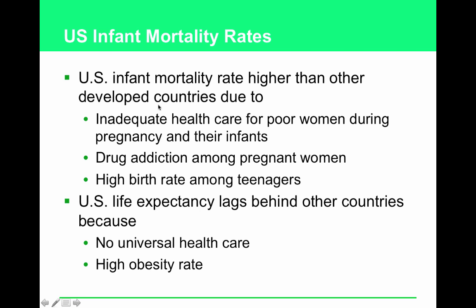As a side note, U.S. infant mortality rates are higher than other developed countries due to inadequate health care for poor women during pregnancy and for their infants, especially with places like Planned Parenthood being closed — a lot of what they provide is reproductive care for women. Other factors include drug addiction among pregnant women and high birth rates among teenagers, although in recent years teen birth rates are the lowest they've ever been. U.S. life expectancy also lags behind other countries because of no universal health care and high obesity rates, which cause many health problems.